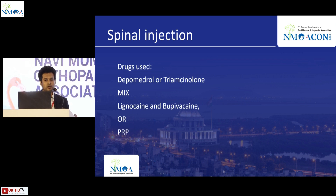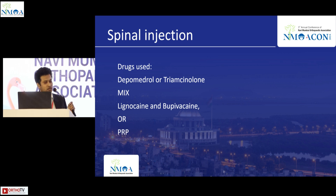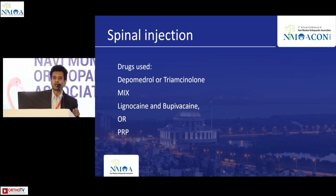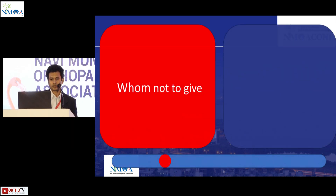The drugs usually injected are depo-medrol and triamcinolone, but the problem with these drugs is that they are particulate. If injected into an artery or the dura, there may be complications. These are usually mixed with local anesthetics. A newer option is PRP.